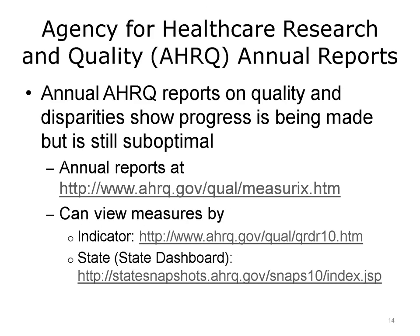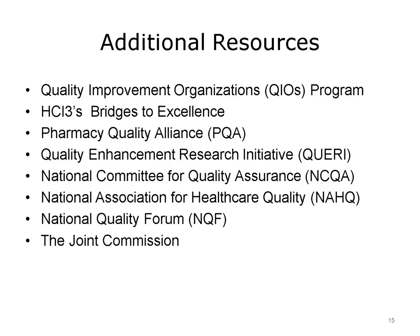The Agency for Healthcare Research and Quality, AHRQ, also puts out annual reports on health care quality and disparity that show that progress is being made but is still suboptimal. The quality reports allow viewing of measures by indicator or by state. Many organizations are working to improve patient care quality through various industry-wide efforts that provide public resources such as guidelines, topical case studies, and research studies for health care providers.